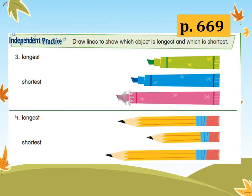Now open your book to page 669. Let's do the independent practice. Draw lines to show which object is longest and which is shortest. Number three: which is the longest? Which is the shortest? Number four: which is the longest? And which is the shortest? You have one minute to do that.